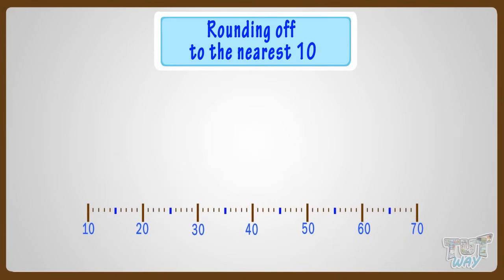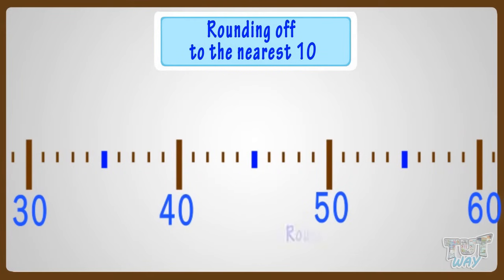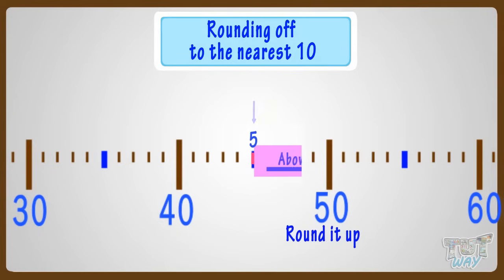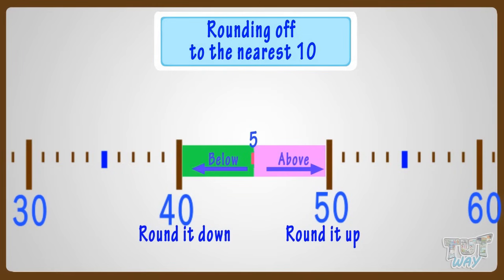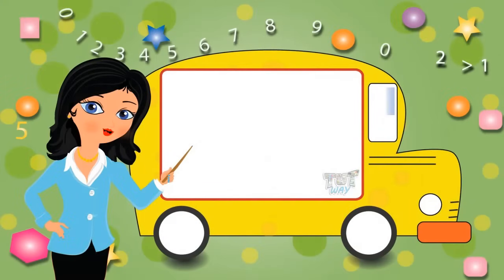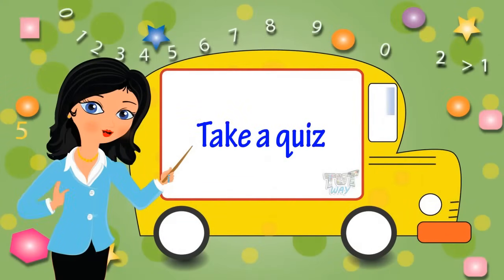So what have we learned? Whenever we have to round a number to the nearest ten, we round the number up if it's on the five mark or above the five mark, and we round the number down if it's below the five mark. Good — now go ahead and take a quiz to learn more. Bye bye!